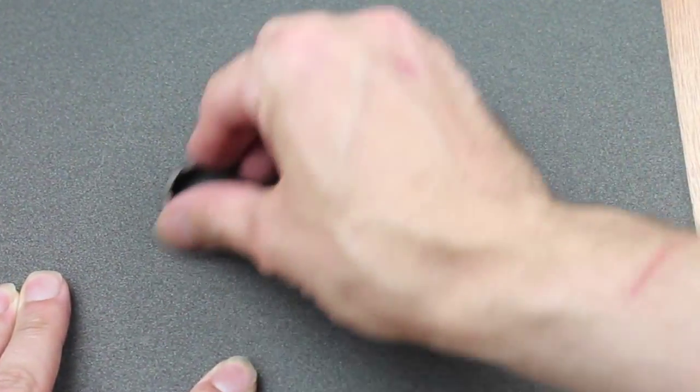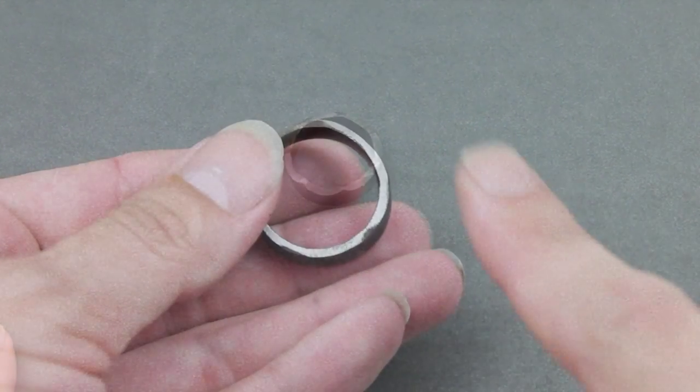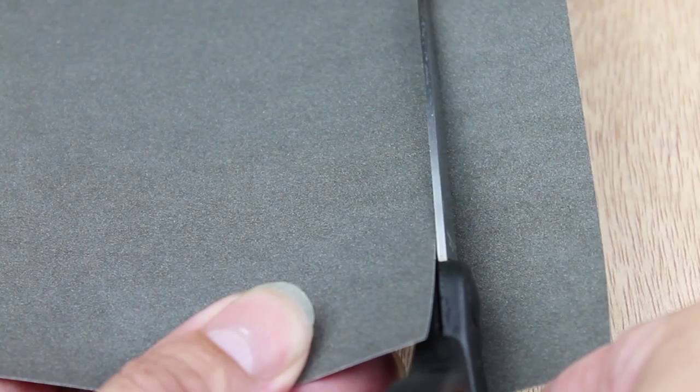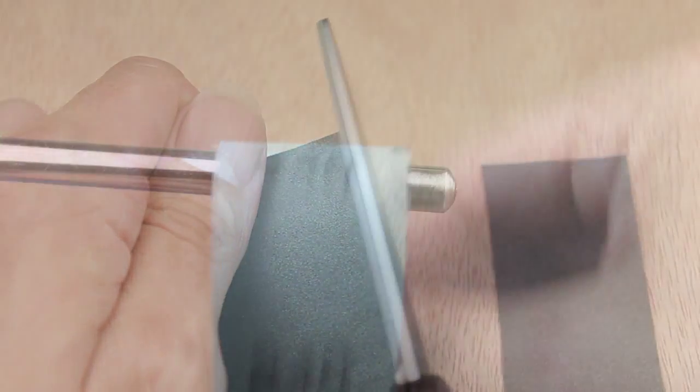I like to use these big sheets flat on the bench to sand rings. Just make sure there's nothing underneath and the bench is clean. Lay it flat, and I like to go through a couple of grits to get a nice smooth finish on the edge before polishing. I also sometimes use a thin strip to polish round burrs.